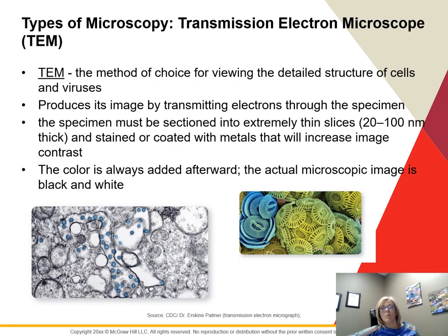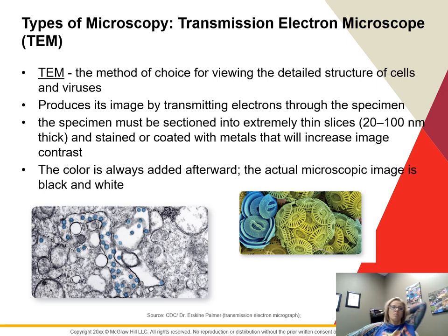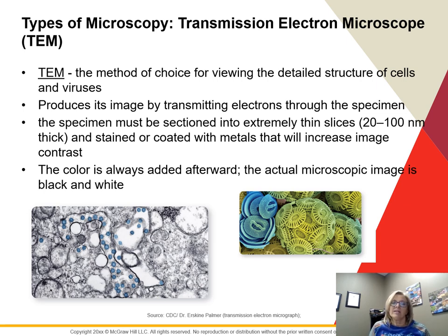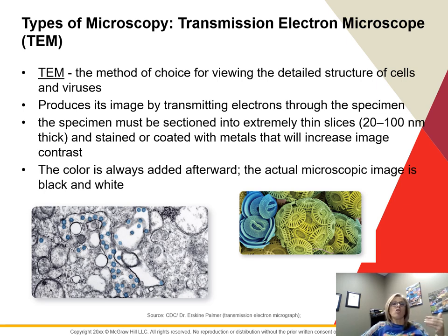The Transmission Electron Microscope, or TEM, allows us to see very small things like detailed structures of cells and viruses. It works by transmitting electrons through the specimen. Because electrons don't pass through thick things easily, the specimen must be sectioned into very thin slices — similar to an MRI. Specimens can be stained or coated with metals to increase image contrast. Darker areas in a TEM micrograph represent thicker or denser parts; lighter areas are more transparent and less dense.